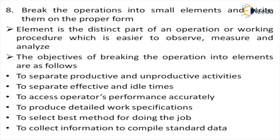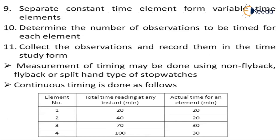Elements, as mentioned, are the smaller parts of operations which are easier to observe, measure and analyze. Now, separate constant time from variable time. Constant time is the time taken for doing the same kind of operation — the time repeats over a longer period. Variable time, on the other hand, varies for every operation.